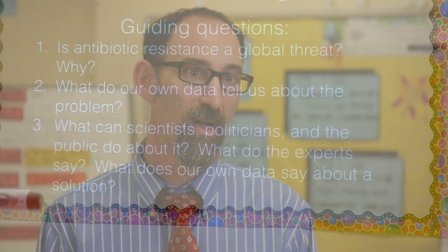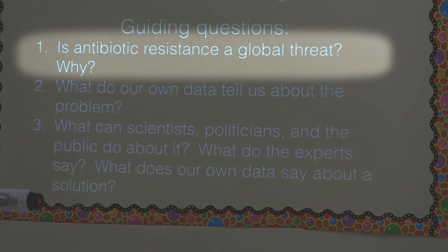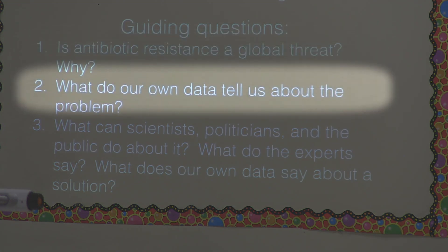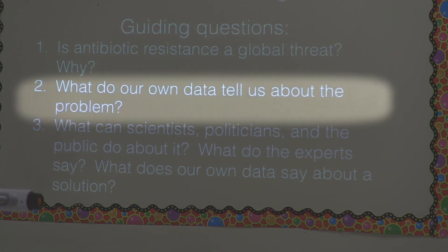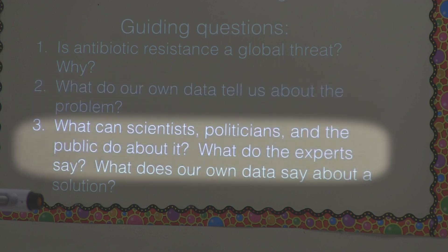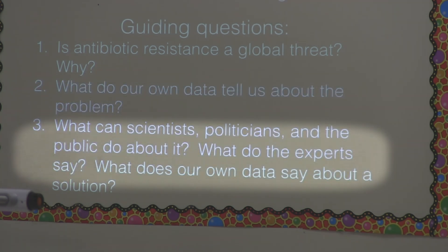I wanted students to start by talking big picture about the issue, to get kids caught up on what they were supposed to know. Then I wanted to really focus on the data. And then I really wanted kids to be in a place where they could talk about, so what? What's important about this issue? The first guiding question is: is antibiotic resistance a global threat? Why? How do we know?